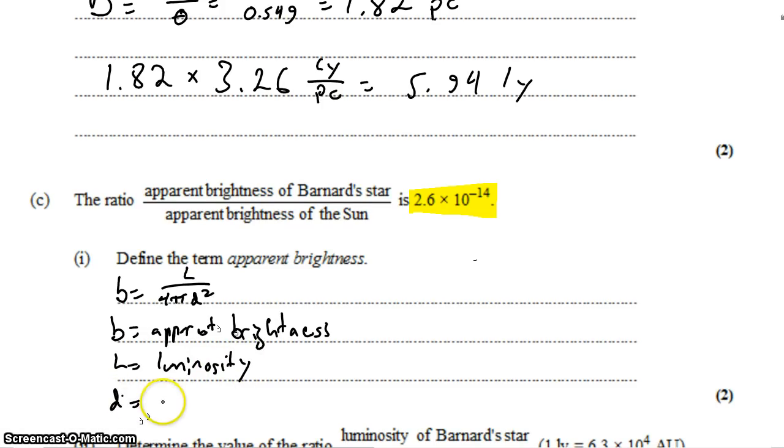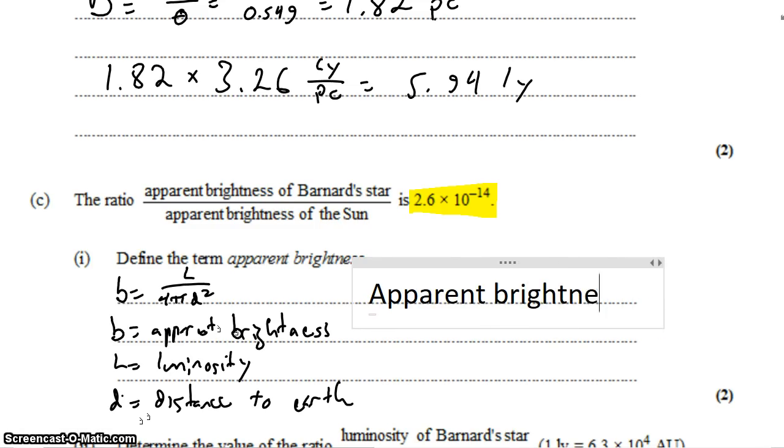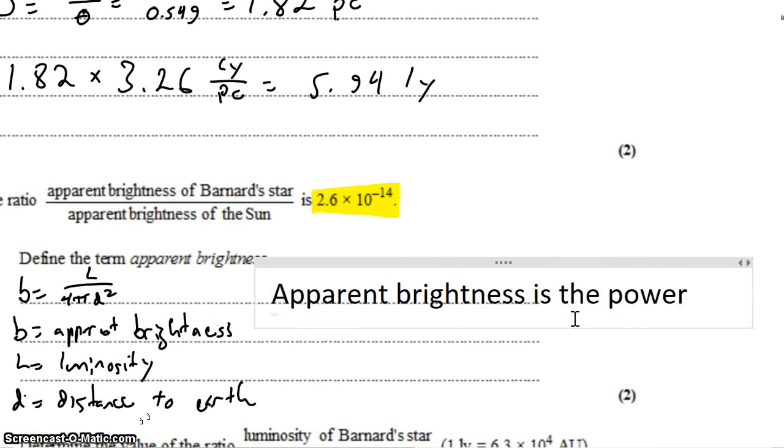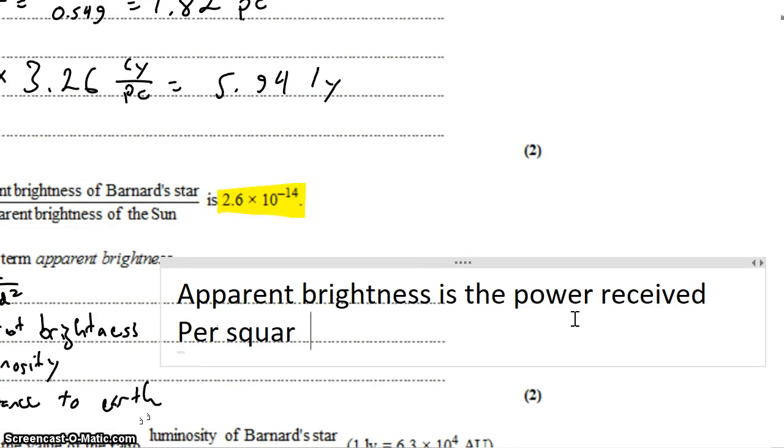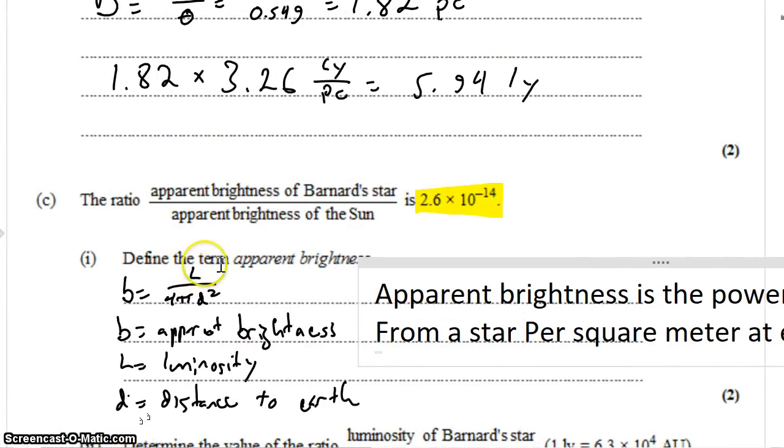Always a good idea to back that up with a description. So we'll say that apparent brightness is the power received per square meter at Earth. So power received from the star per square meter at Earth. Basically what we're doing is we're taking the total power emitted by the star, the luminosity, and we're dividing that by the number of square meters in the shell that the Earth lies in. So we're dividing that power into all of the square meters that it has to pass through to determine how much power passes through each square meter. And that's the apparent brightness. How bright the star appears in the sky.